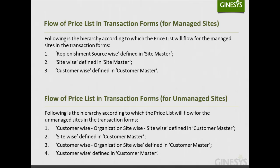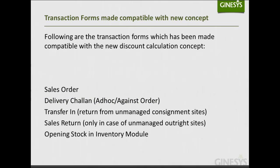For unmanaged sites (continued): if not provided, then site-wise defined in the Customer Master; if not provided, then customer-wise organization-site-wise defined in the Customer Master's Organization Site window; and finally customer-wise defined in the Customer Master. The transaction forms to which this new concept has been implemented are: Sales Order, Delivery Challan, Ad-hoc Delivery Challan Against Order, Transfer In (for returning from unmanaged consignment sites), Sales Return (only for unmanaged outright sites), and Opening Stock in the Inventory module.